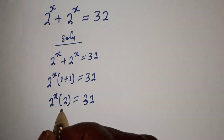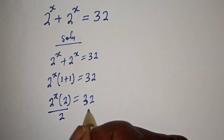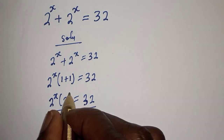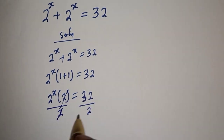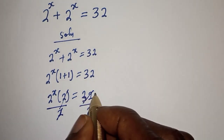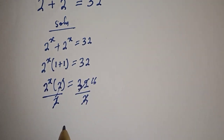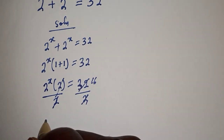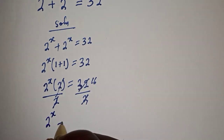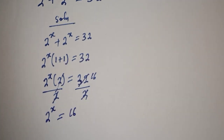Now let's divide both sides by 2. Dividing by 2 cancels this 2 here, giving us 16 on the right. So 2 raised to power s is equal to 16.